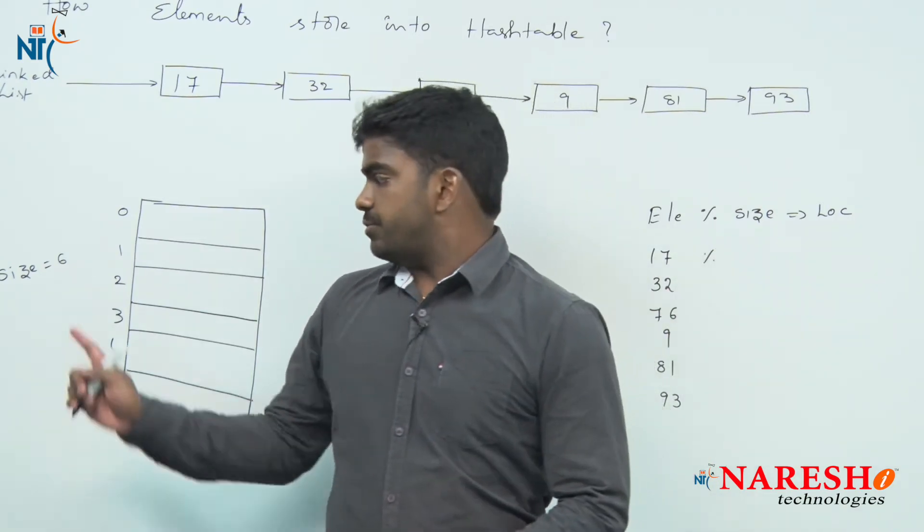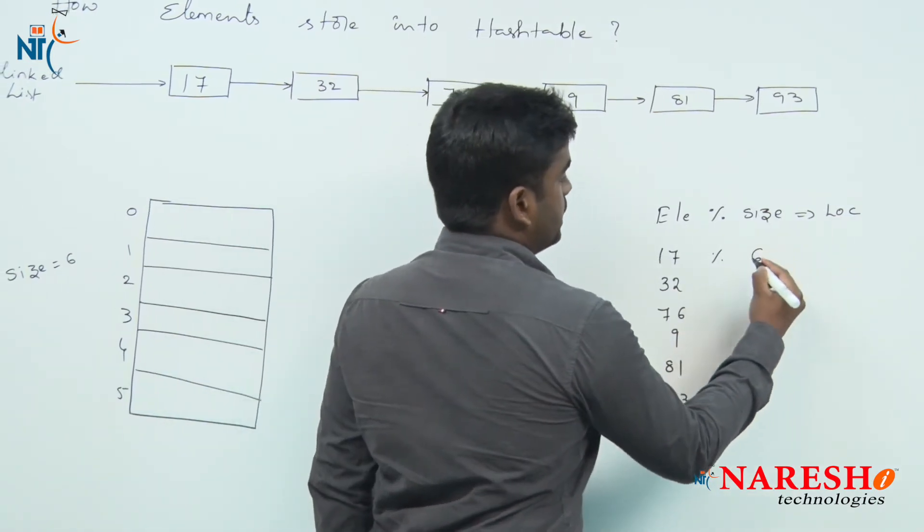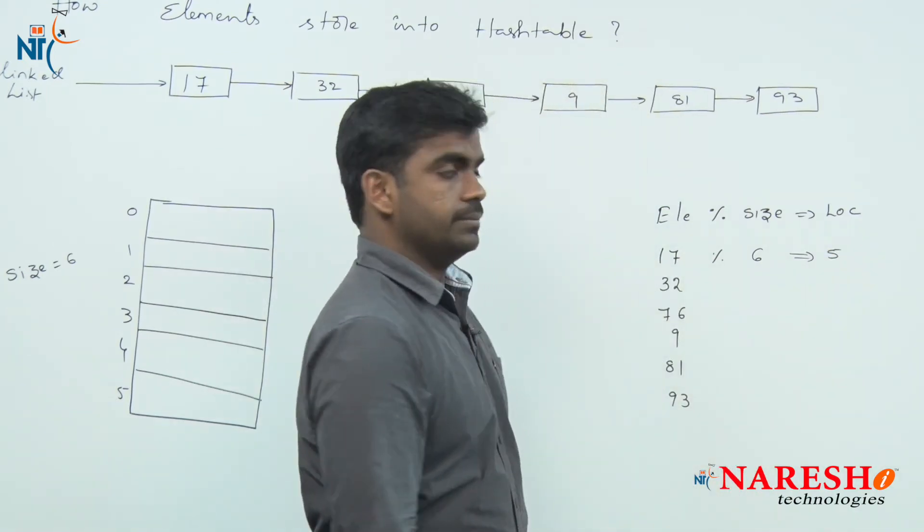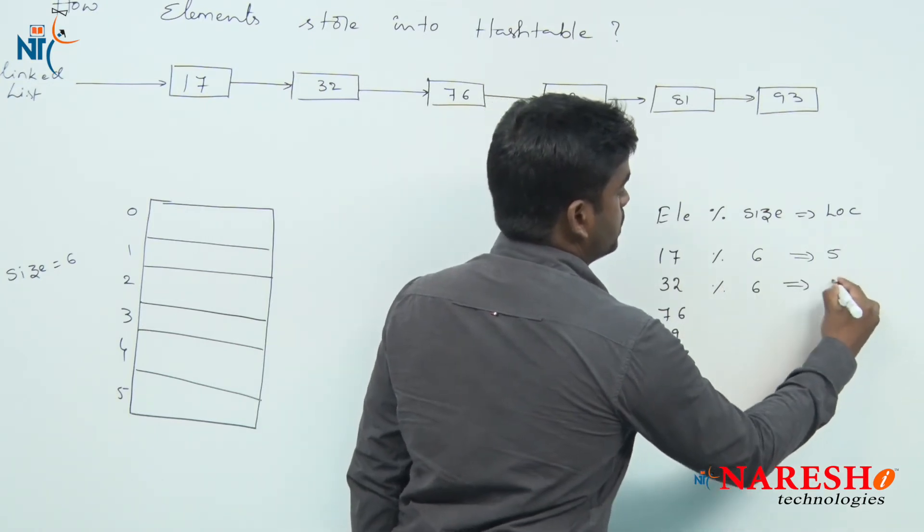What is the size of hash table? Here we considered 6. So, here 17 mod 6 value is 5, the location is 5. And next 32 mod 6, here it is a value is 2.